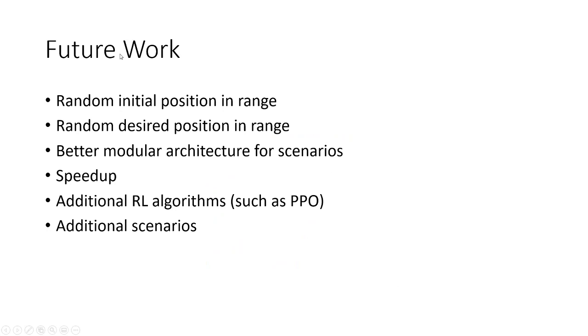Now, what does future work? Well, we could add a few features like random initial position, random desired positions. The modular architecture could maybe be made better for scenarios. We could try to speed up the process even more. The training doesn't last as long just to try to get better performance. We could add PPO, which is one of the algorithms used a lot in literature, and we could just add additional scenarios. The reason why that has not yet been done is because the current research we're doing with Q-Plane, we want to look into Q-Learning with attitude control. If you have any questions, you can let me know on my GitHub. Thank you!